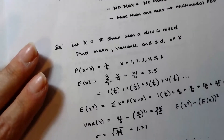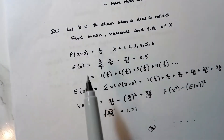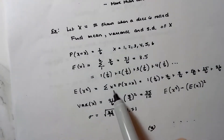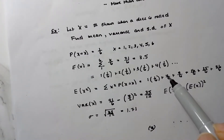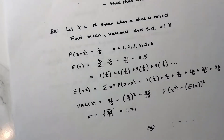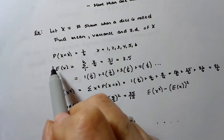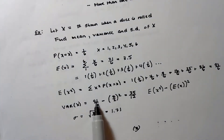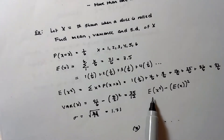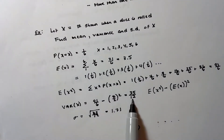To find E(X²), use the same formula but square each x value: (1²)(1/6) + (2²)(1/6) + (3²)(1/6) and so forth, giving 91/6. For the variance: σ² = E(X²) − [E(X)]² = 91/6 − (7/2)² = 91/6 − 49/4 = 35/12. The standard deviation is the square root of that, which is approximately 1.71.